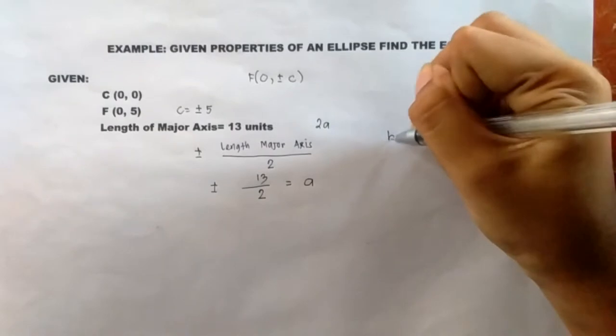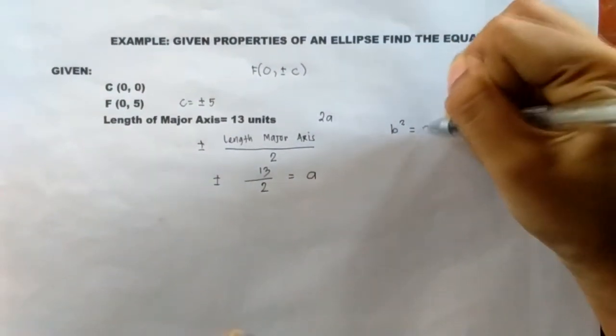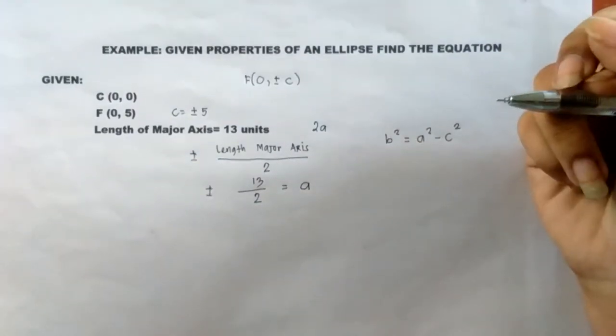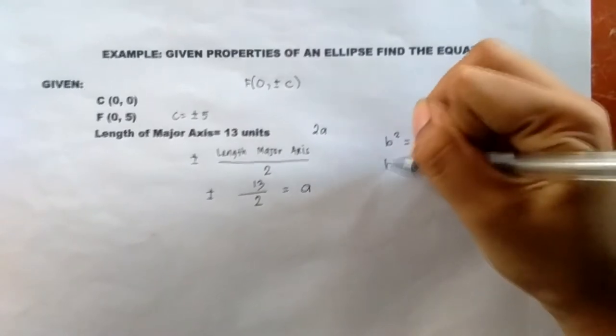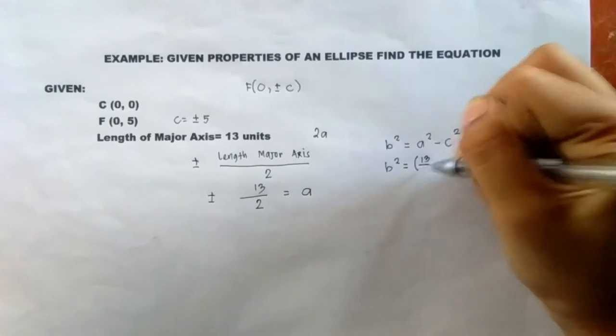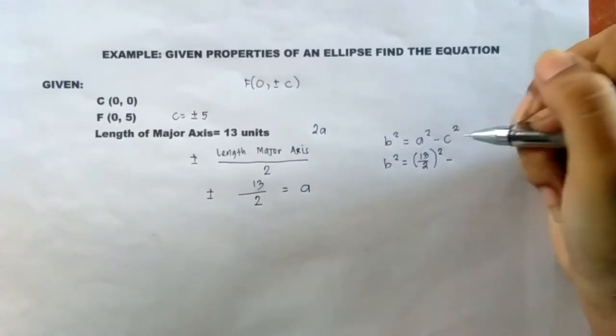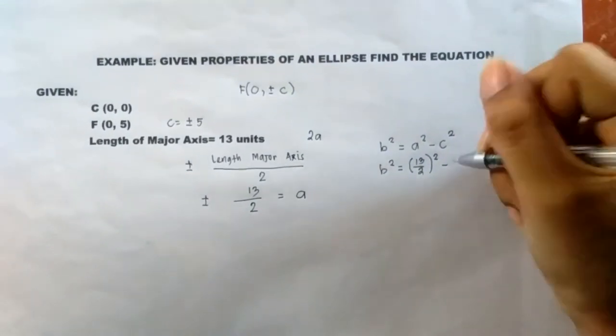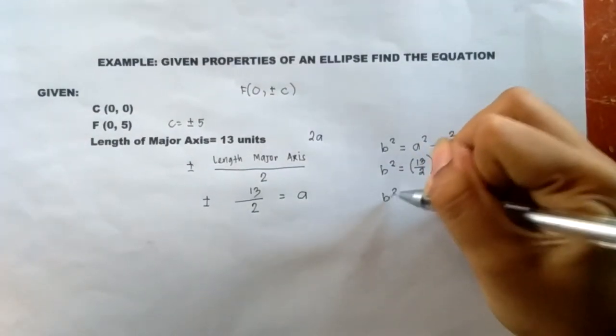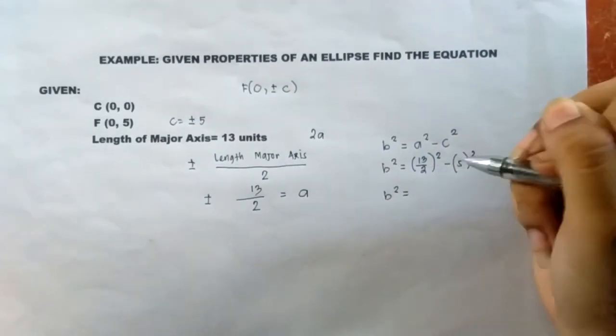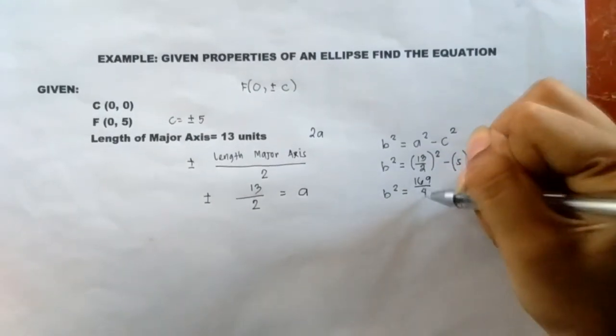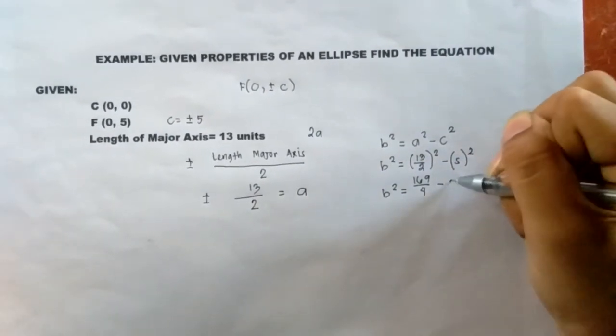In solving for our b, we have the formula: b² equals a² minus c². Now, what we need to do is plug in the values. We have the length of our a, which is 13/2 squared, minus the length of our c, which is 5 squared. 13/2 squared equals 169/4 minus the square of 5, which is 25.